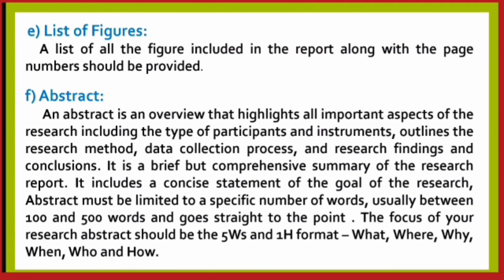An abstract is an overview that highlights all important aspects of the research, including the type of participants and instruments, an outline of the research method, data collection process, research findings, and conclusions. It is a brief but comprehensive summary of the research report. It includes a concise statement of the goal of the research. The abstract must be limited to a specific number of words — usually between 100 and 500 words — and goes straight to the point.